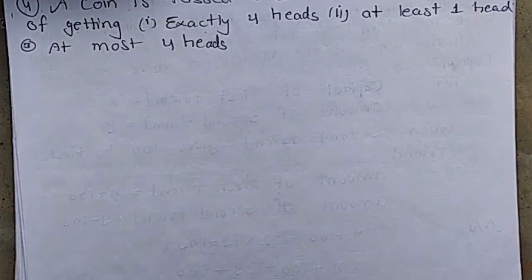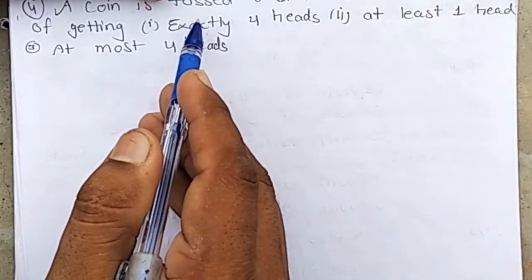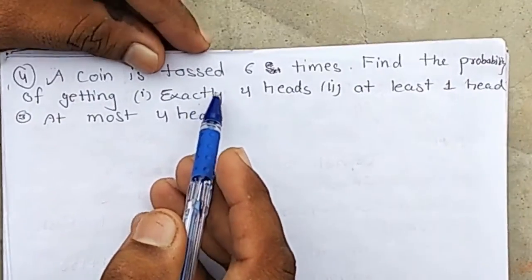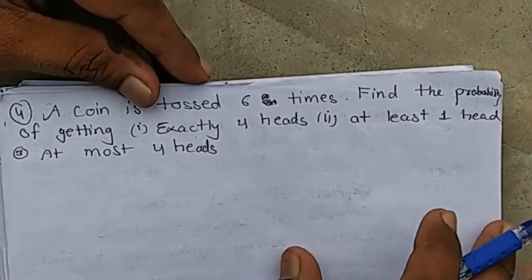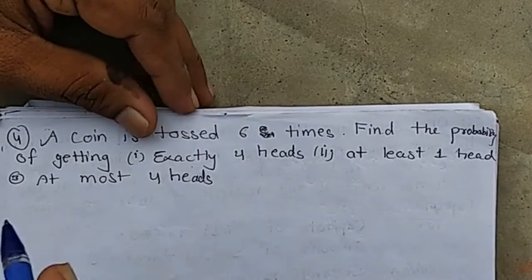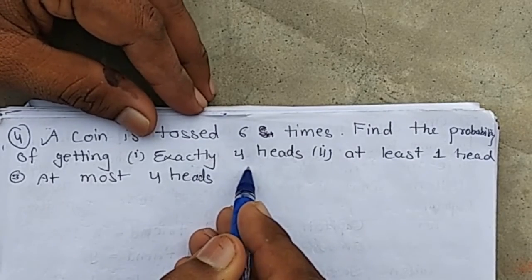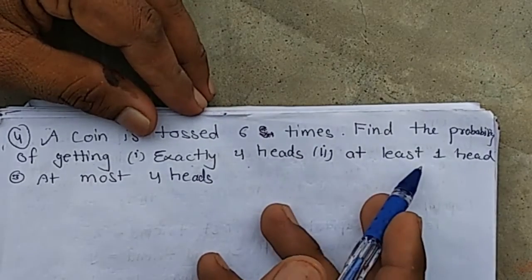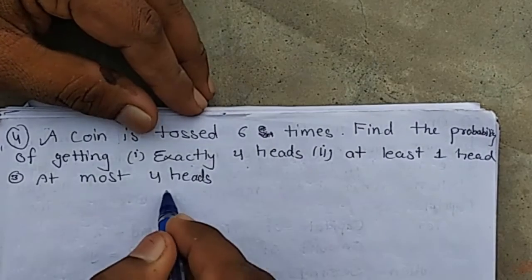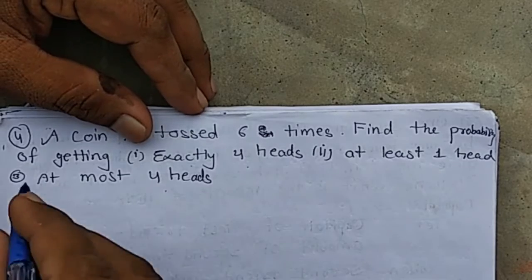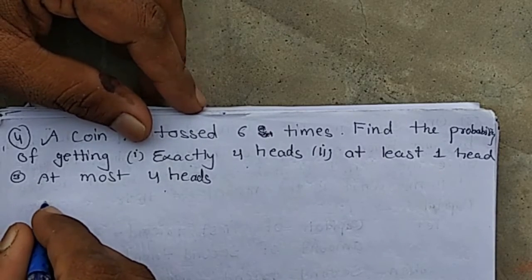Question number 4. A coin is tossed 6 times. Find the probability of getting: exactly 4 heads, at least 1 head, at most 4 heads.